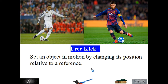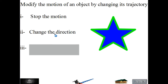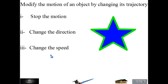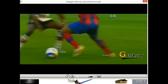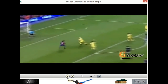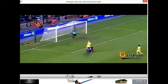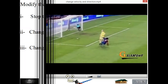This is the second effect of mechanical action: when we modify the motion of an object by changing its trajectory, or stop the motion, or change the direction, or change the speed. Look here how he stopped the ball and changed its direction. Look here how he stopped it also and changed its direction. All these are effects of forces.